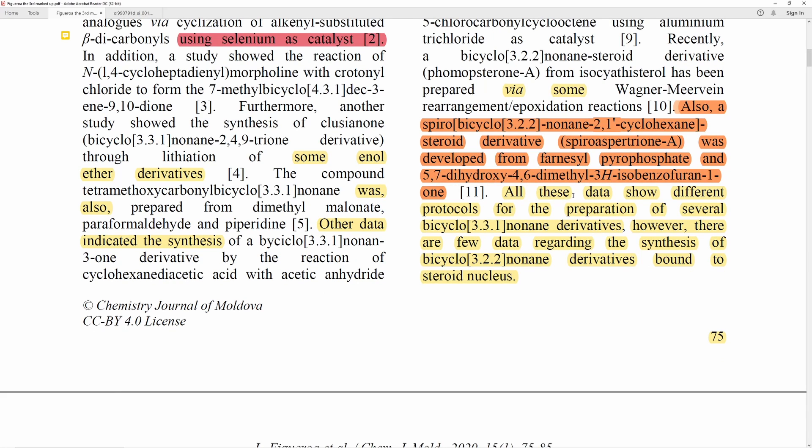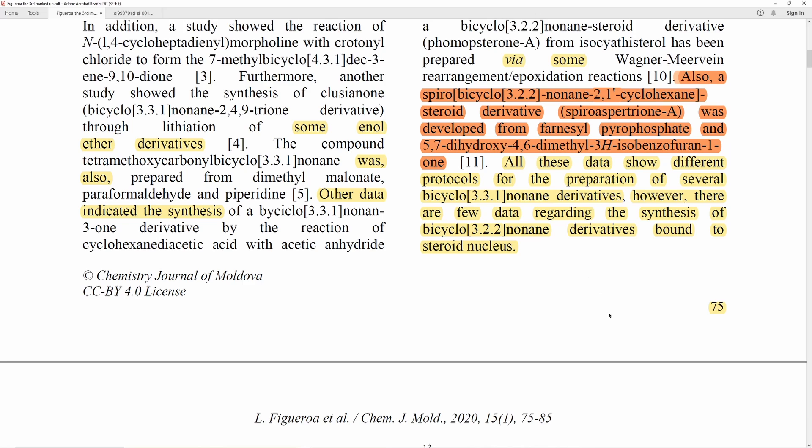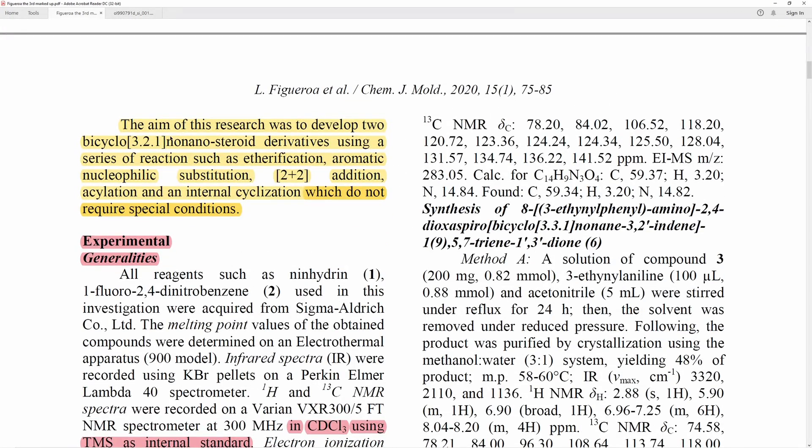All these data show different protocols for the preparation of several bicyclo-331-nonane derivatives. However, there are few data regarding the synthesis of bicyclo-322-nonane derivatives bound to the steroid nucleus. So they do show different protocols, but in this paper we're also going to see for each reaction that there's different protocols, because that's just chemistry. You're not going to have one set of conditions with one set of reagents that works for every transformation, because chemistry requires different conditions. The aim of this research was to develop two bicyclo-321-nonane steroid derivatives using, I think this is a typo, but it could just be a unique nomenclature here, using a series of reactions such as etherification, aromatic nucleophilic substitution, 2 plus 2 addition, acylation, and an internal cyclization, which do not require special conditions. Now, you might not know what special means, but I can tell you that this episode is a special episode, and there's some of the most special Figueroa chemistry that we've seen so far on this channel, so make sure you buckle in.